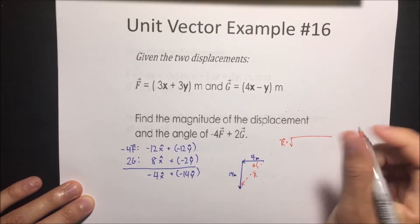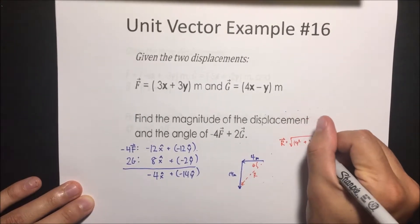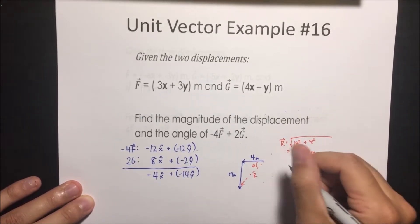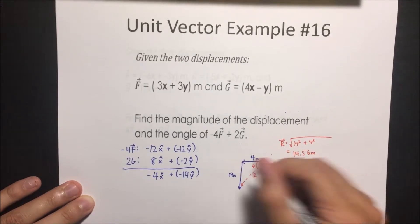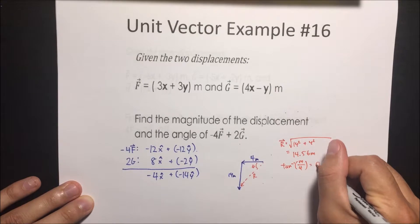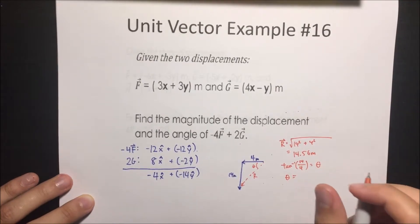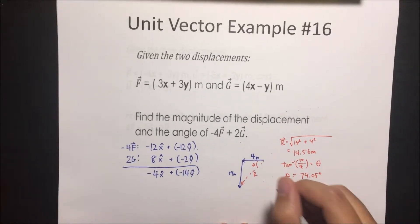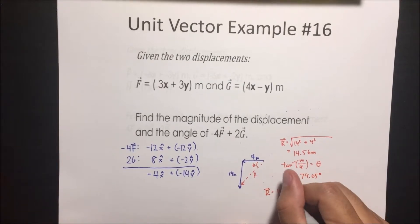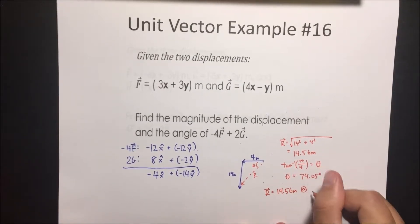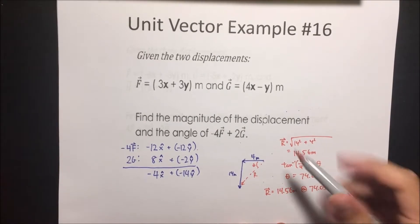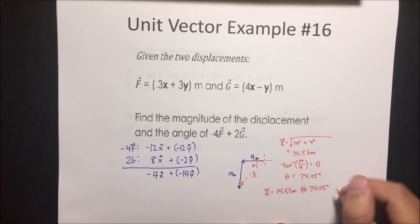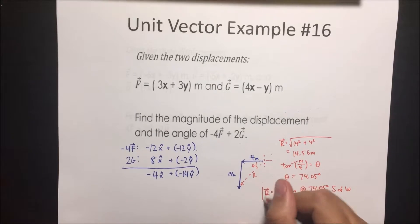The resultant vector is found using the Pythagorean theorem: √(14² + 4²), which gives 14.56 meters. To find the angle, we use tan⁻¹(opposite/adjacent) = tan⁻¹(14/4), giving theta equal to 74.05 degrees. The resultant vector is 14.56 meters at 74.05 degrees. Since we're going left and down, this is south of west.